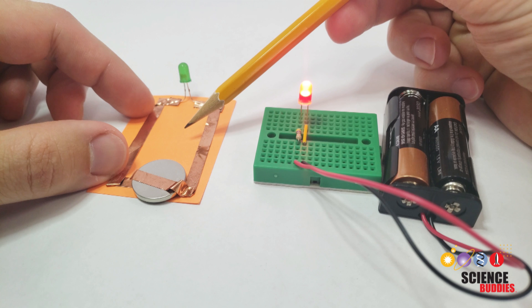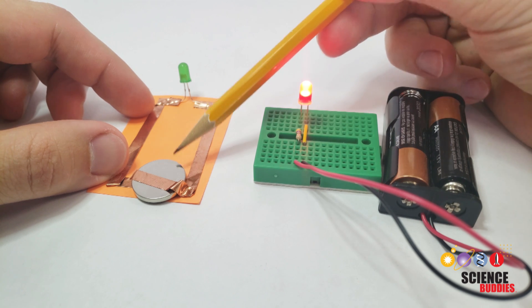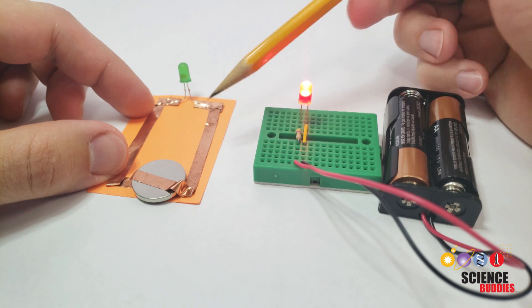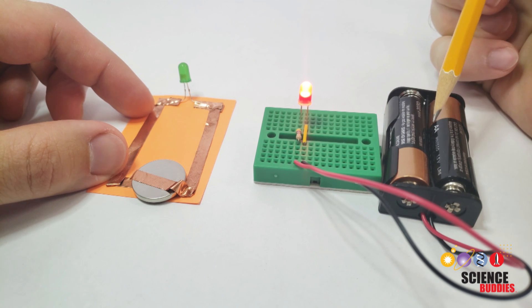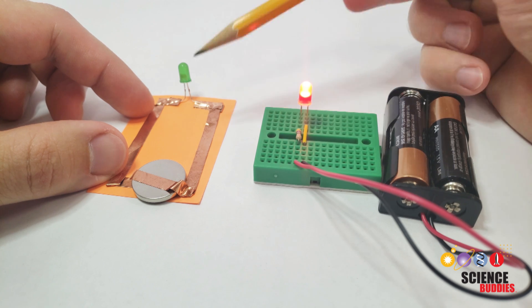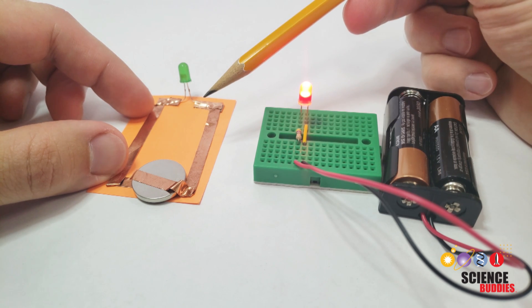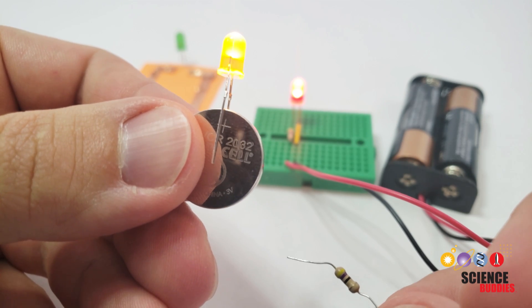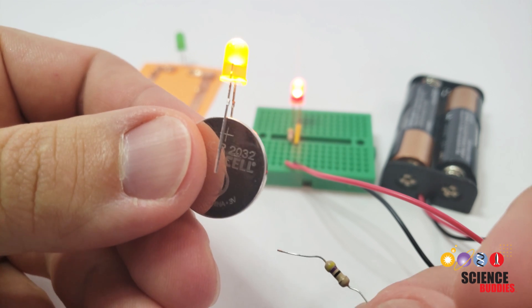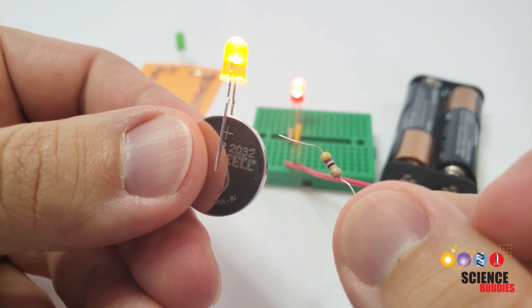Paper circuits use paper, copper tape, and coin cell batteries to build circuits, instead of something like breadboards, wires, and larger AA or AAA batteries that you may be more familiar with if you've built circuits before. This makes it easier to integrate your circuit into an art project like a painting or a greeting card. Coin cell batteries don't provide very much current, so it's generally safe to connect an LED directly to them without including a resistor.